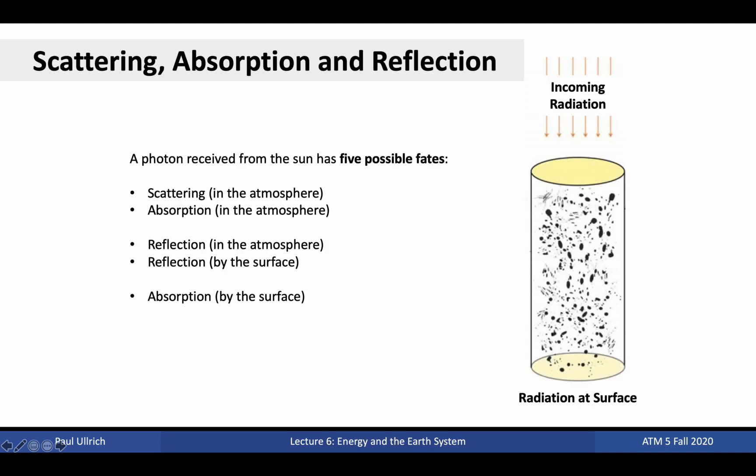We're going to talk a little bit more today about how light interacts with the atmosphere. Incoming photons from the sun have five possible fates: they can be scattered by the atmosphere, absorbed by the atmosphere, reflected by the atmosphere, reflected by the surface, or absorbed by the surface.